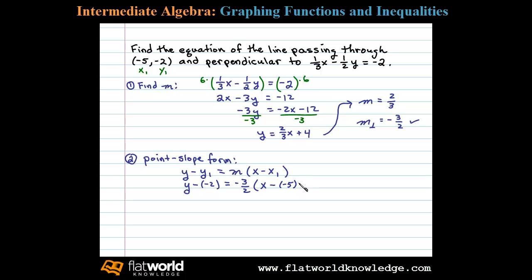After you substitute into point-slope form, you then simplify. So in this case we have y + 2 = (-3/2)(x + 5).